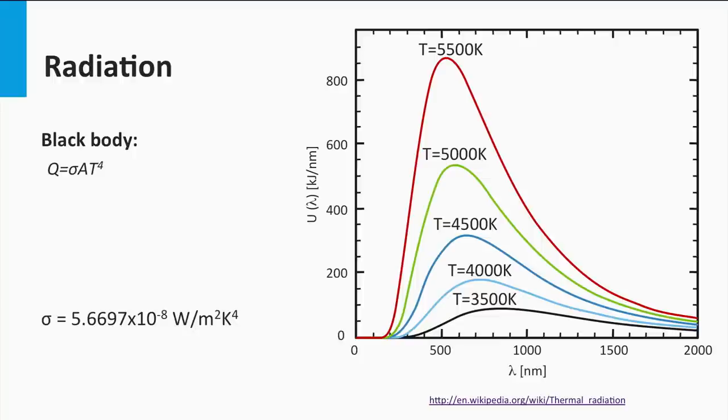Planck's law describes the electromagnetic radiation at a certain temperature in any medium as a function of wavelength, as shown in this graph. By integrating Planck's law over all wavelengths, it gives the total energy emitted per unit of area by the formula given here, which is the temperature of the body in Kelvin.